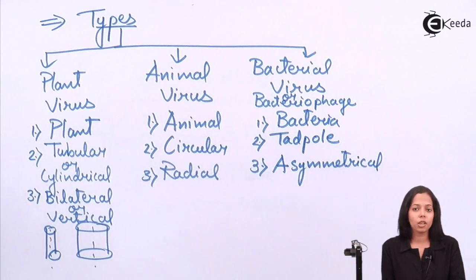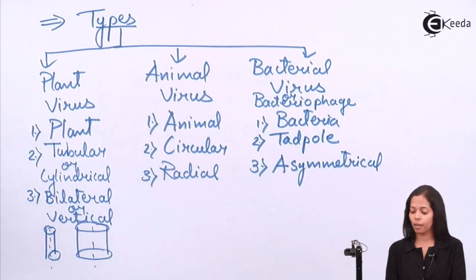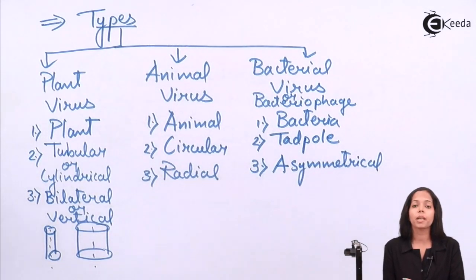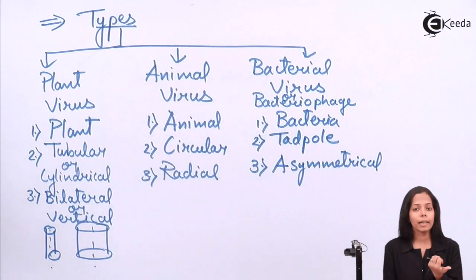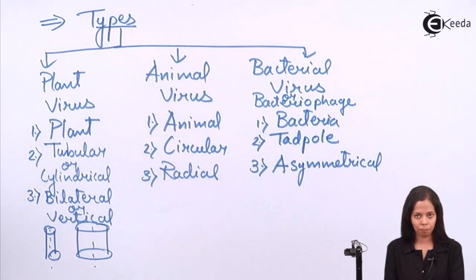The next thing which we need to know is which type of nucleic acid is present in this virus. Speaking about plant virus, plant virus contains only RNA. Animal virus may contain RNA or DNA. Speaking about bacterial virus, they contain only DNA. So plant virus RNA, bacterial virus DNA, and animal virus DNA or RNA.